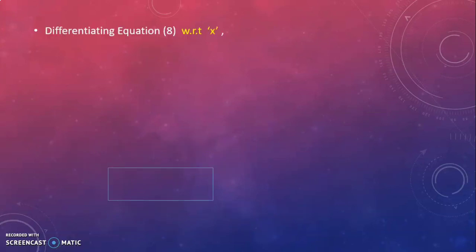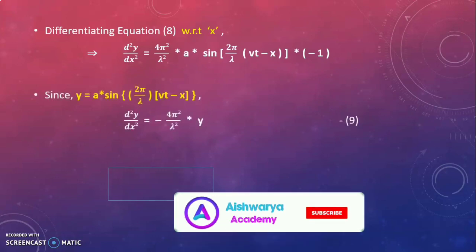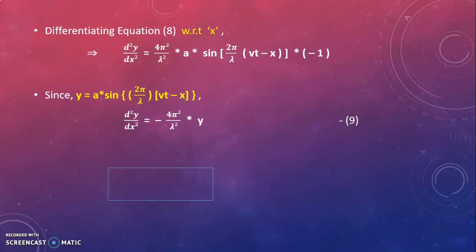Differentiating again with respect to x, that is the double differentiation of equation 4 with respect to x, we get d²y/dx² = −(4π²/λ²) × a × sin((2π/λ)(vt − x)) × (−1). Since y = a sin((2π/λ)(vt − x)), we get d²y/dx² = −(4π²/λ²) × y × (−1), which simplifies.